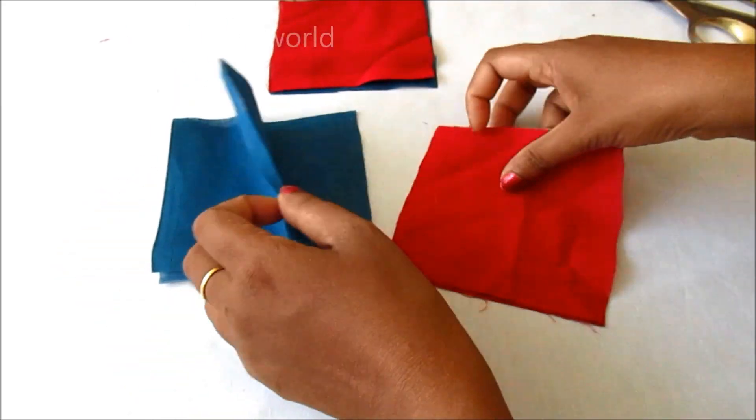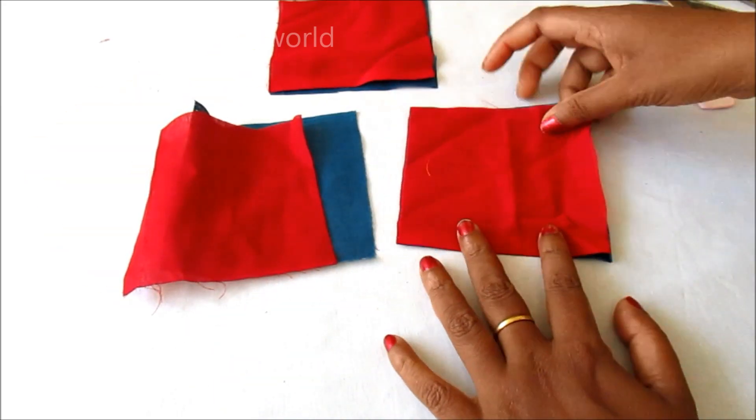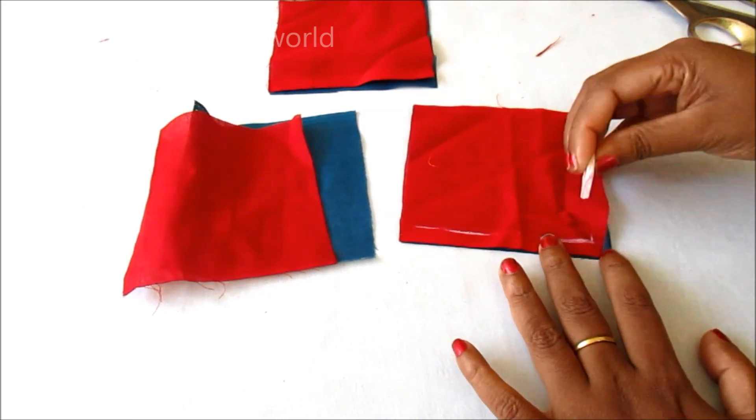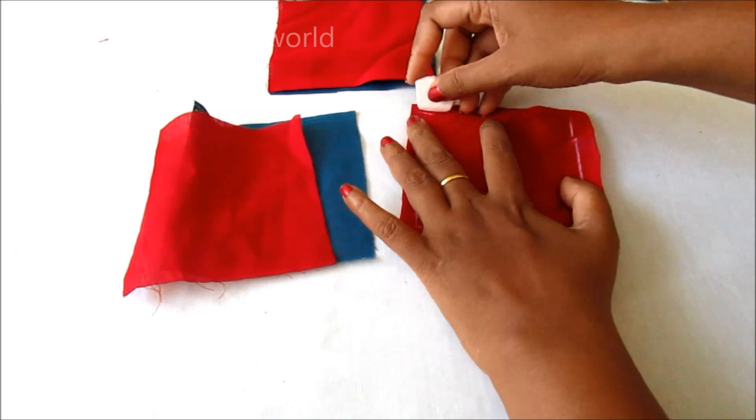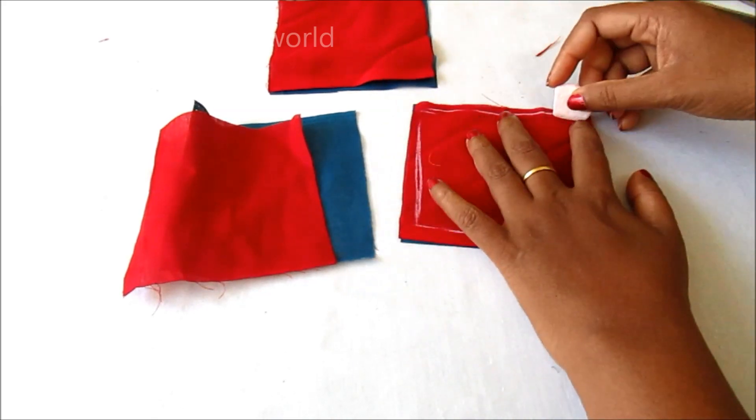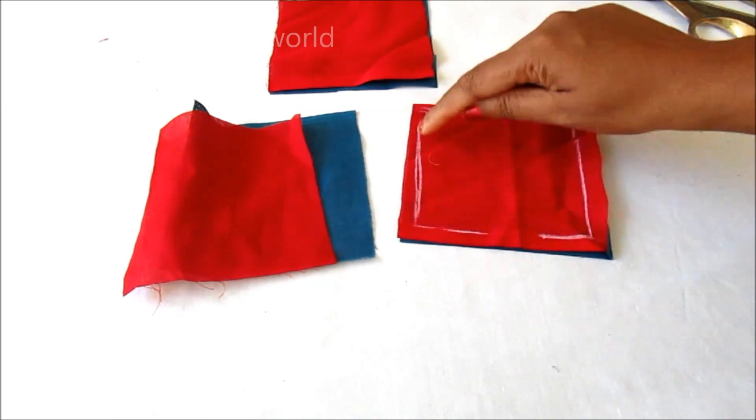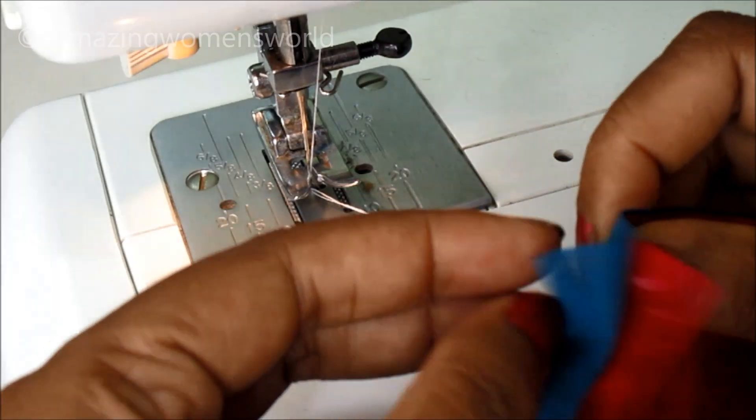Now I'll align two strips of different colors, placing both right sides together. With the quarter inch seam allowance, I will stitch on the sides in the shape of the square. At one place I leave the gap of one inch so that we can flip easily. I'm making three patches in the shape of the square. Let's start with the stitching.